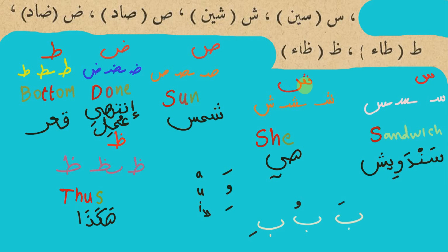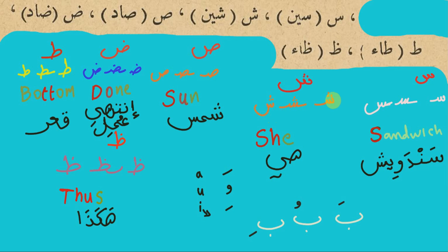This SHA here — that's how it looks at the beginning, in the middle of a word, and at the end of the word. Notice when it's at the end or by itself, you only write the two teeth, and the third one completes the letter when it's by itself or at the end. When it's in the middle or beginning of a word, you have to show all three teeth.